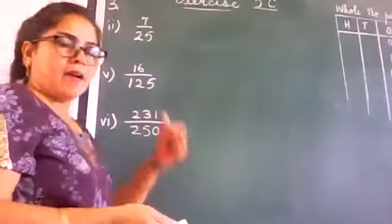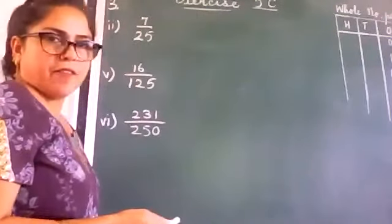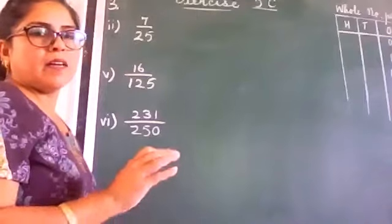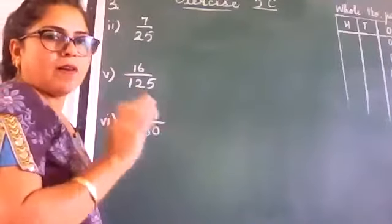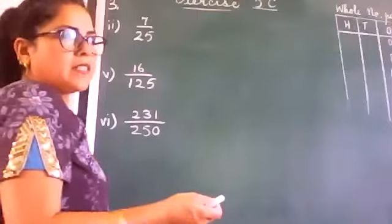25 we cannot make it 10 but we can always make it 100. So we find an equivalent fraction with the denominator 100 or 1000 or something like that and then we change it into a decimal number.